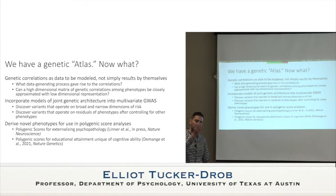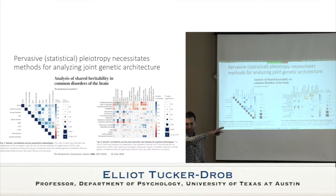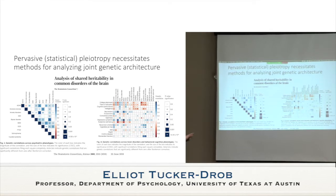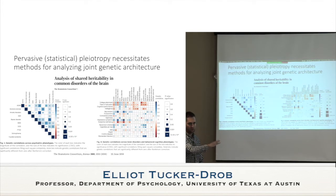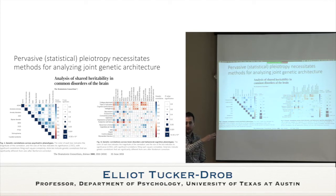Just taking a step back, as of the Brainstorm paper, my perception was that the genetic correlations themselves were considered the finding — you did your analysis and stopped there. My critique is that's fine for 10-by-10 matrices, but as the number of GWAS phenotypes grows, the number of cells increases even faster: it's the number of phenotypes times the number of phenotypes minus one, divided by two. So you end up with a big data problem.